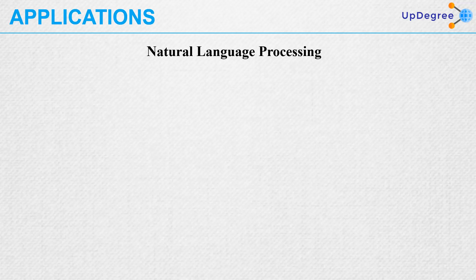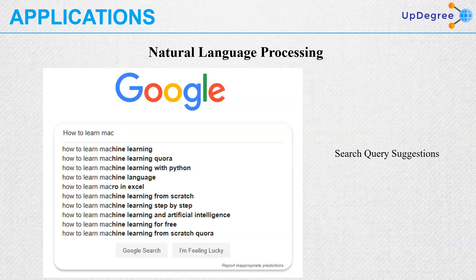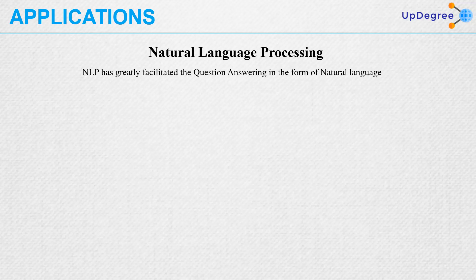Then comes natural language processing, which is having widespread application nowadays. Different kinds of voice recognition applications are made using NLP, like Amazon Alexa, Google Assistant, or Apple Siri. Using natural language processing, it is also possible to do query suggestion — so if you try to type something, it will automatically suggest the type of query you will be looking for.